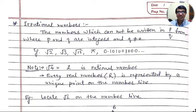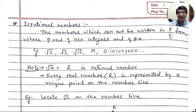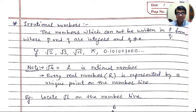Hello students. In the previous video of class 9, we discussed what types of different numbers you have learned in different classes, and we discussed in detail what a rational number is and how to represent it, and how to find rational numbers between any two given rational numbers. In this video, we will learn about irrational numbers, how to locate an irrational number on the number line, and the questions based on exercise 1.2. So let's start.